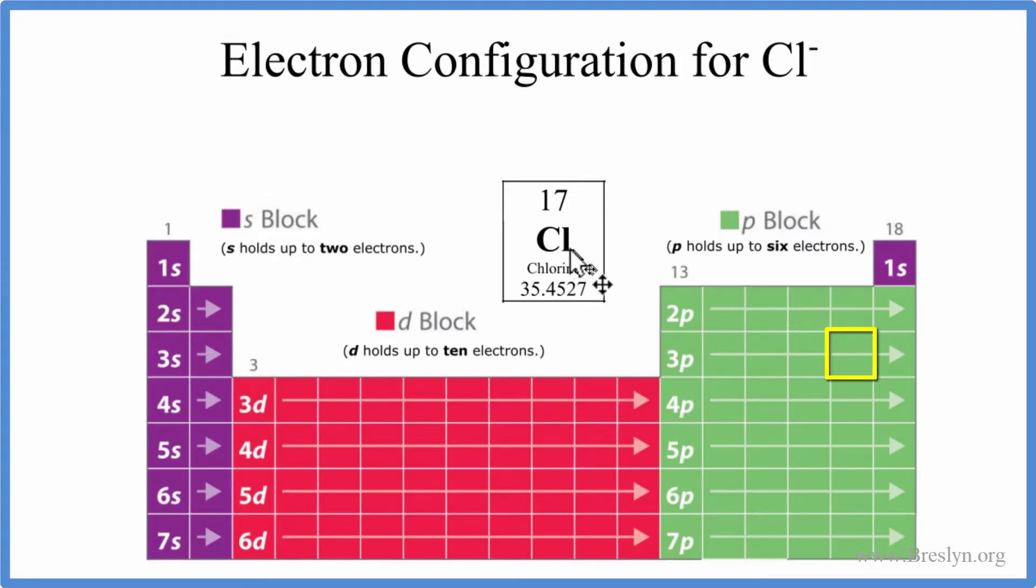That means that the number of protons equals the number of electrons. You can tell it's neutral because it doesn't have a plus or minus up here. Like the chloride ion, it has that minus, so it's an ion.